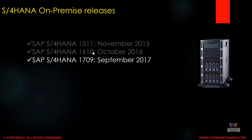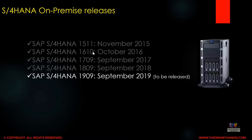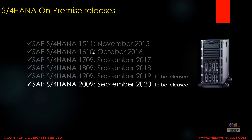Then came 1709 which is September 2017, followed by S4 HANA 1809 which is September 2018. The next expected release is 1909, which is September 2019. This course was created based on 1809 but will be upgraded as new releases arrive. After 1909, the next expected release is 2009, which will be September 2020. Every year there is one on-premise release.